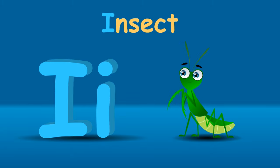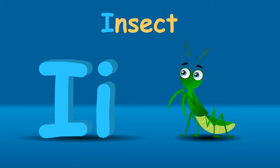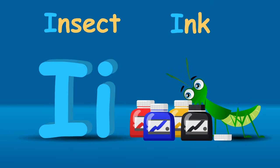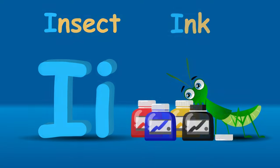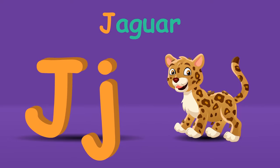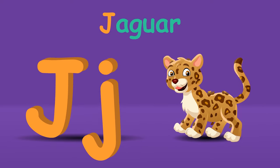I is for insect, e-e-e-insect. I for egg, e-e-e-e.